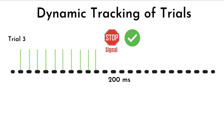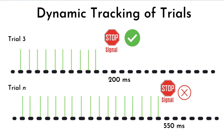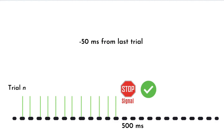Now, if the participant makes an error, the dynamic tracking algorithm will reduce the SSD by 50ms. So, if the SSD in the last stop trial was about 350ms and the participant failed to successfully inhibit, the next stop trial will be at 300ms, and so on. This reduces the predictability in stop trials — a caveat observed in fixed SSD studies — and enables accurate measurement of response inhibition performance. Note that the SSD decreases on all unsuccessful trials, such as those that include premature responses and choice errors.